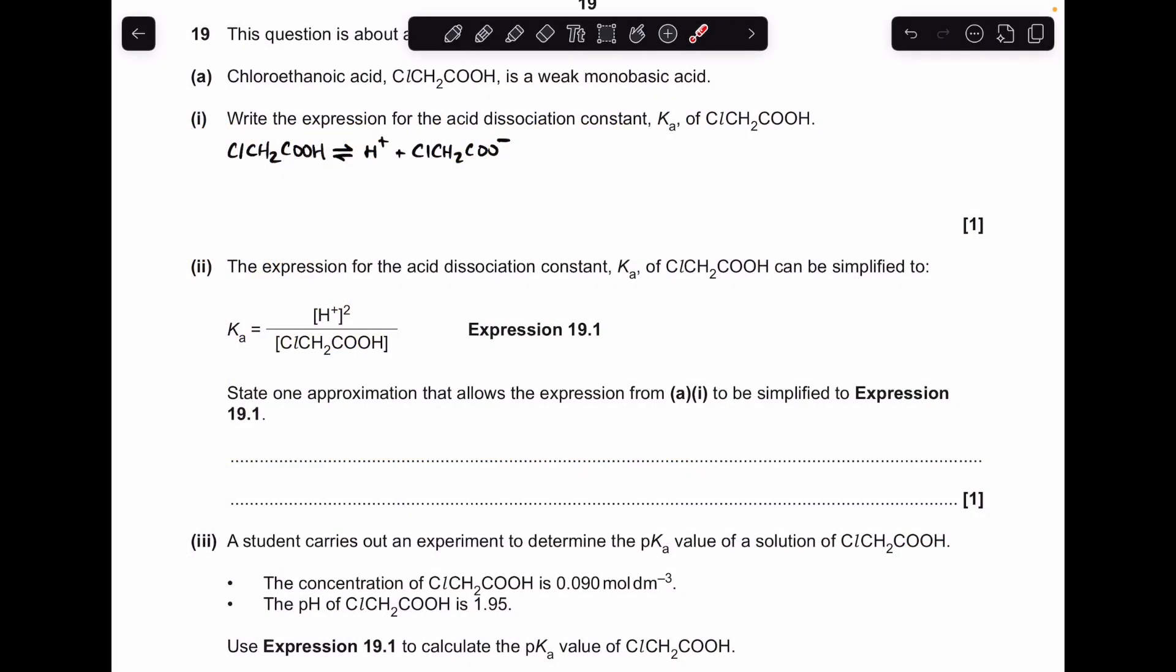So first part of A, we've got to write the expression for the acid dissociation constant for this weak monobasic acid. So all I've done there is just written up the dissociation, and remember that the Ka is a measure of the equilibrium concentrations of